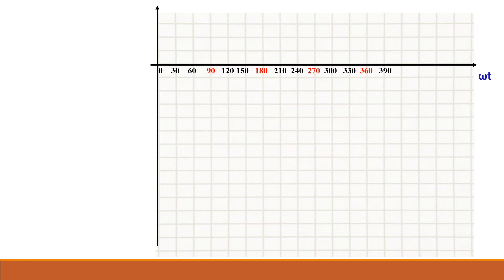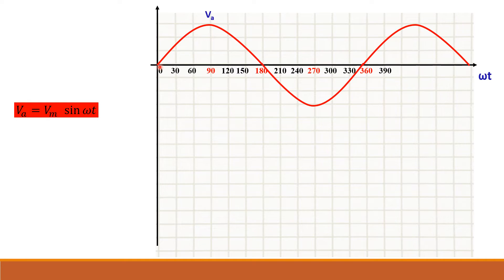Each diode conducts for 120°. Now let us draw the 3-phase waveform. VA = VM sin(ωt), so draw the VA waveform: it starts at 0, at 180° it is again 0, and at 360° it is again 0. It has a positive peak at 90° and a negative peak at 270°. If you know how to draw this sine waveform correctly, you can draw the remaining waveforms.